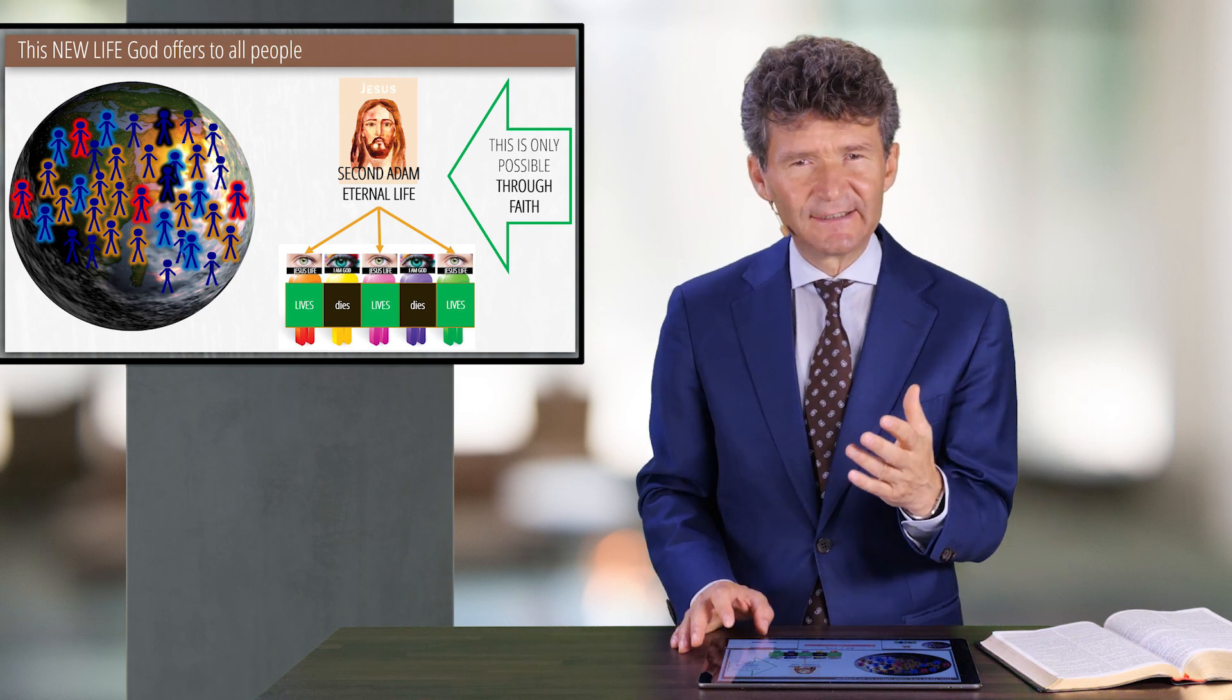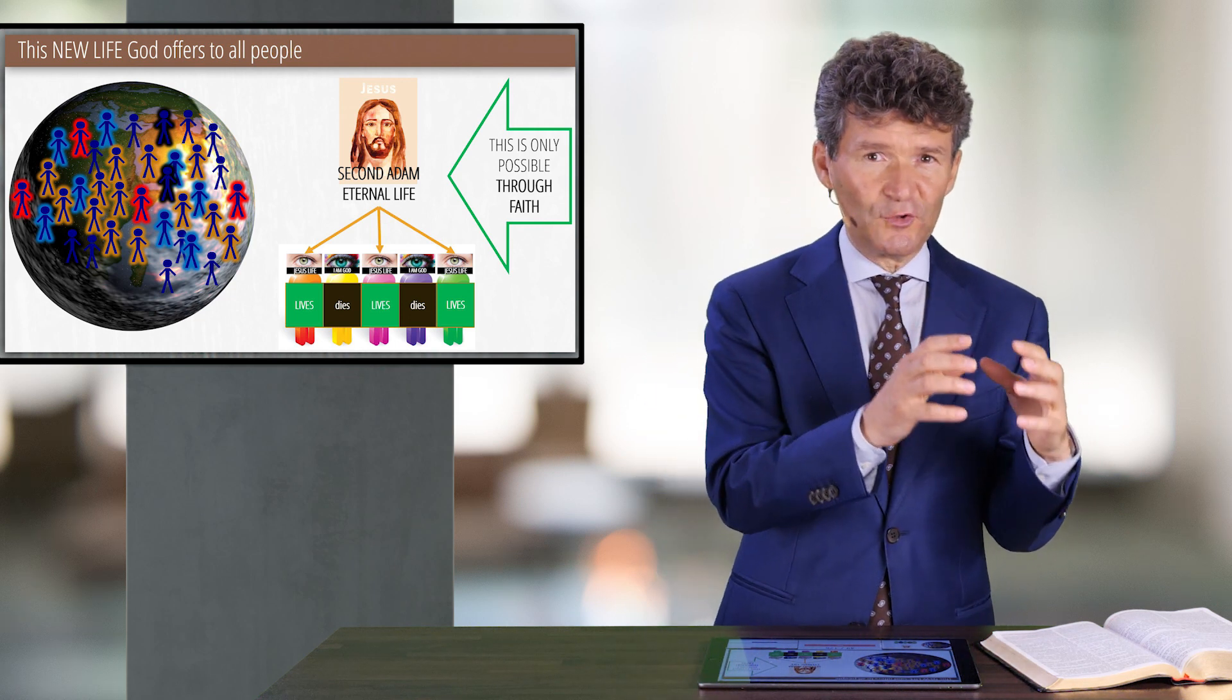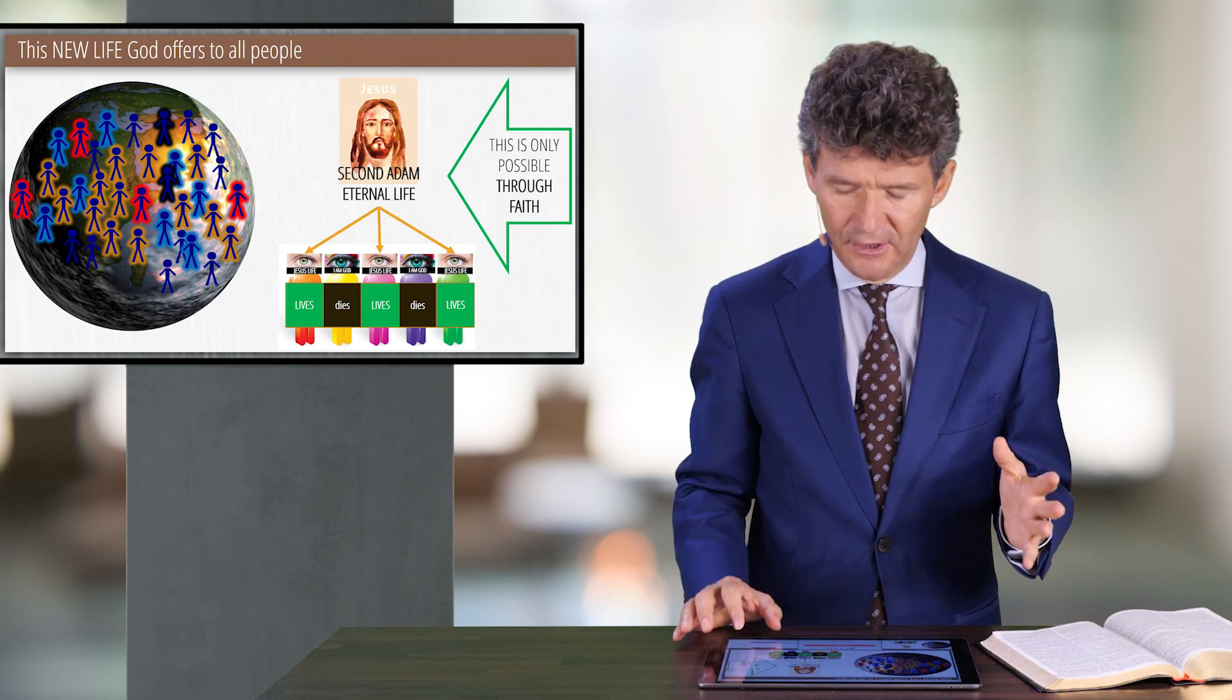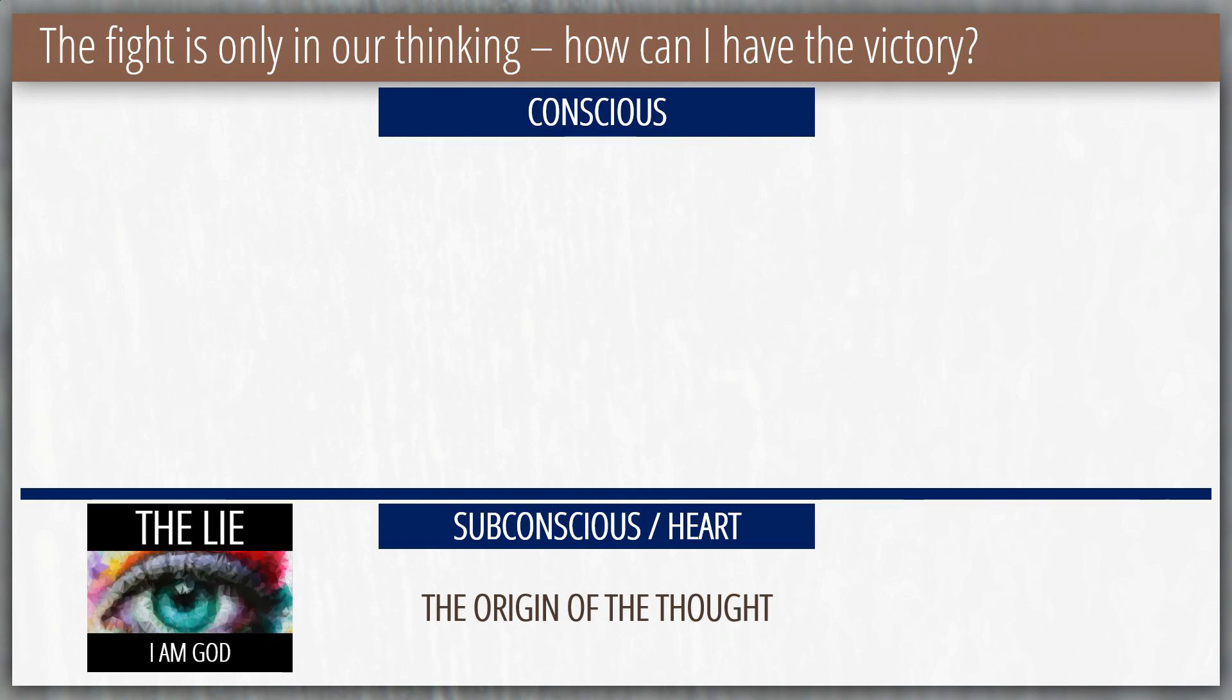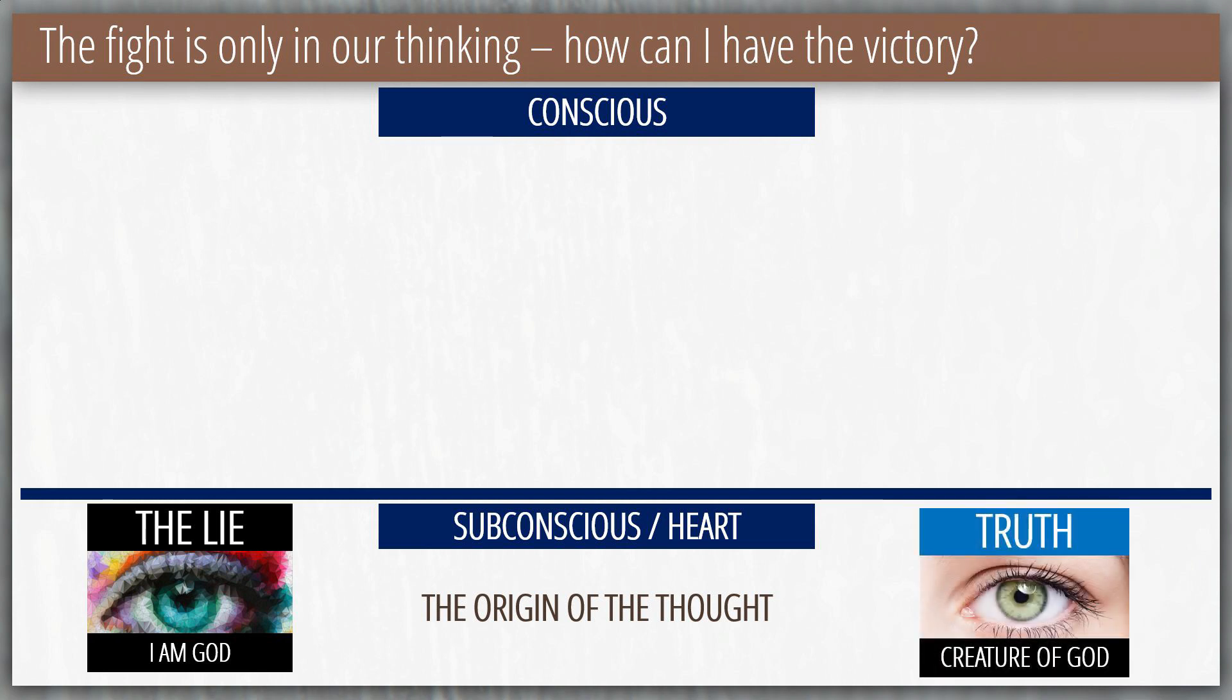Let us understand, there are two wellsprings in reality. We were born with the lie that I am God. And out of this lie, nothing good can come out. And out of the truth to be the life of Jesus, to be a creature of God, to be a son of God or a child of God, there can nothing evil come out. The apostle John, he says, 1 John 3, where he says, from verse 9.